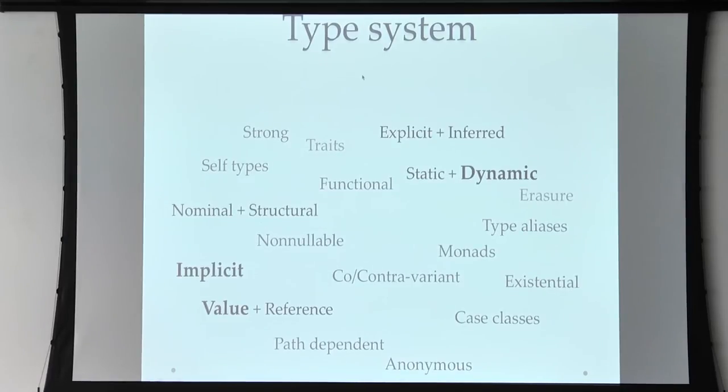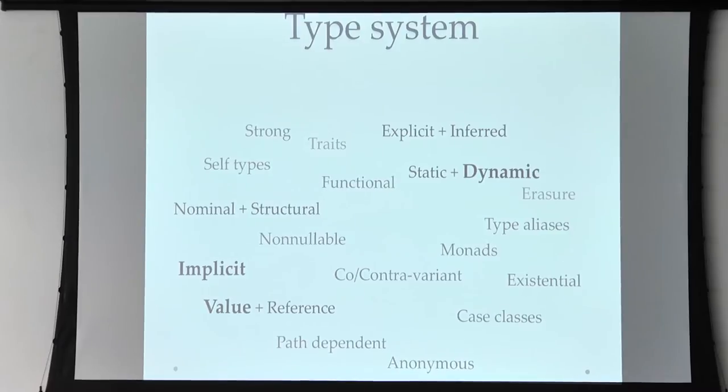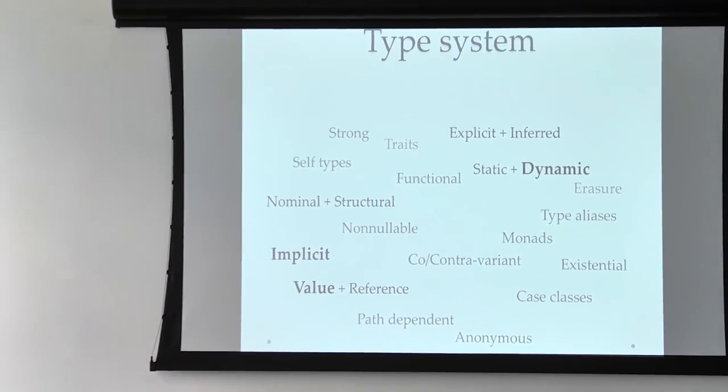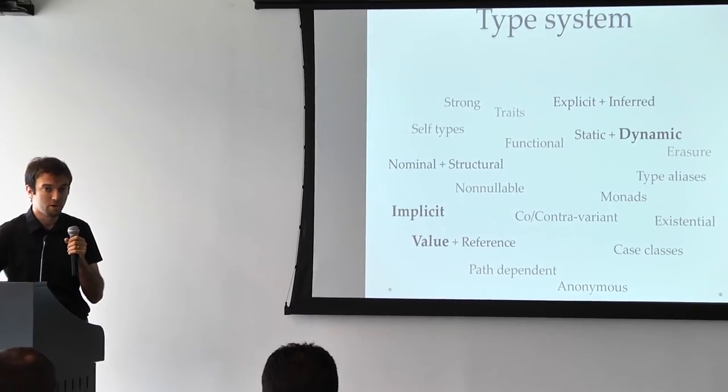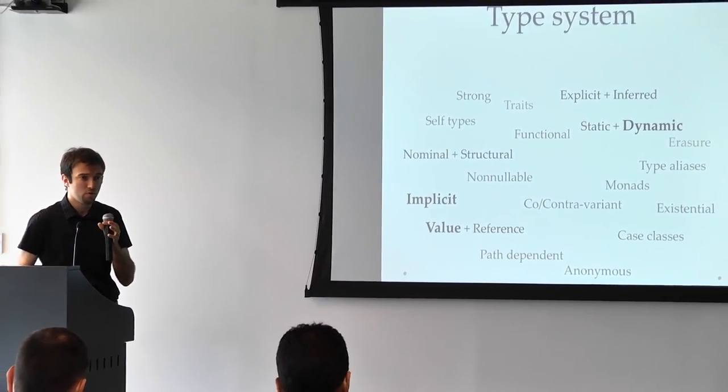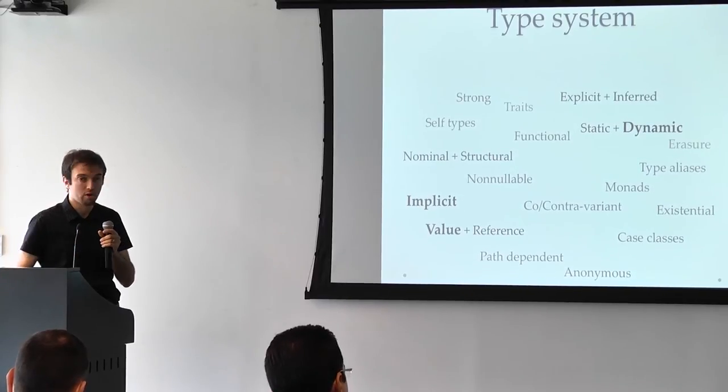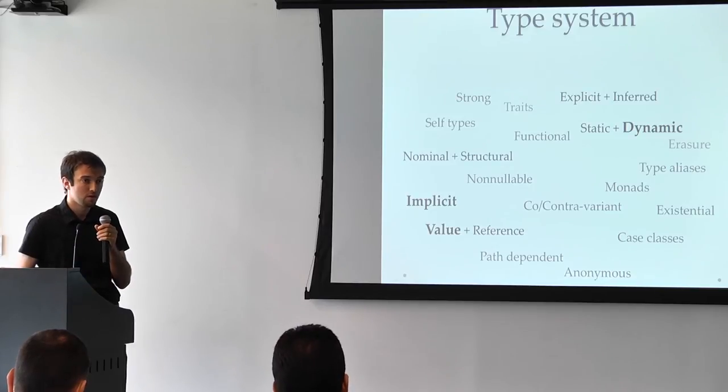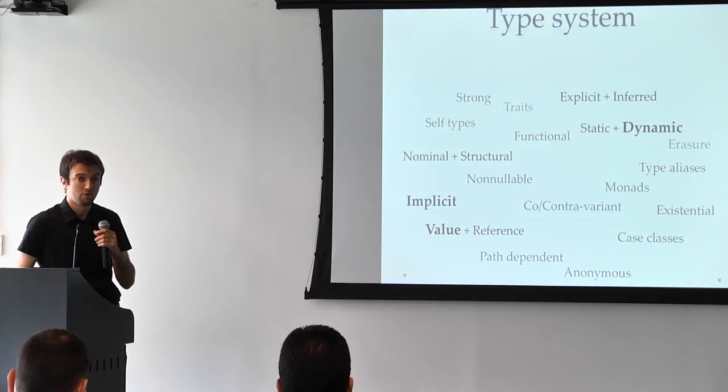So what can we say about the type system in Scala? We know that it's a strongly typed language. It's much stronger than Java. In addition to being nominal, which means that you can give names to types, you can also define structures. Similar to duck typing, but type-safe. So you can say that a function expects to get a parameter that I do not know the type of this parameter, but I want to require it to have certain members or functions. And I can specify their signatures without actually knowing the type or requiring it to be named in a certain way. So this is a powerful concept.